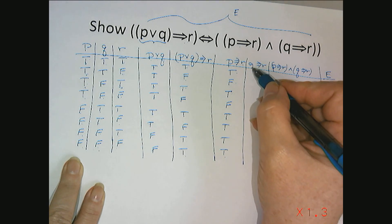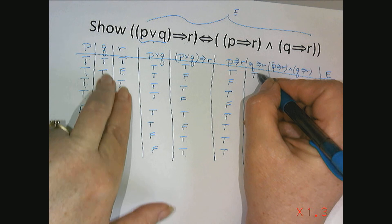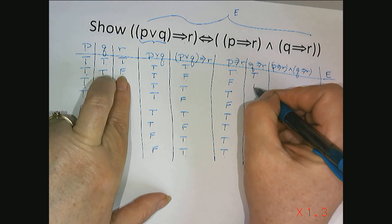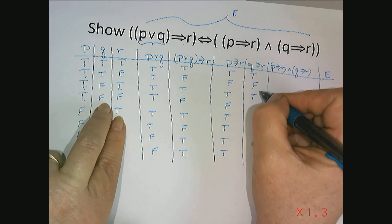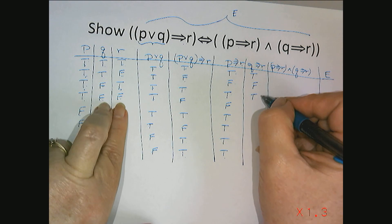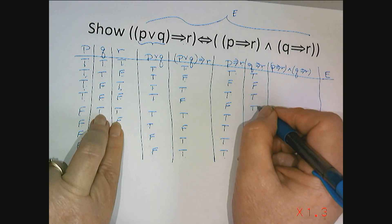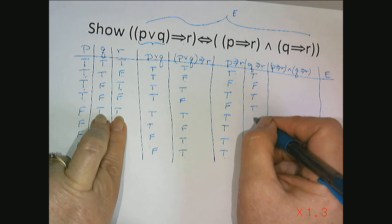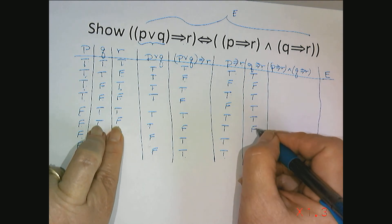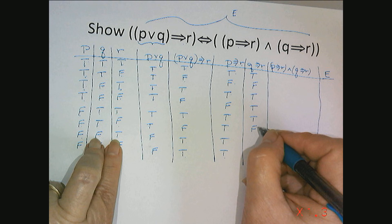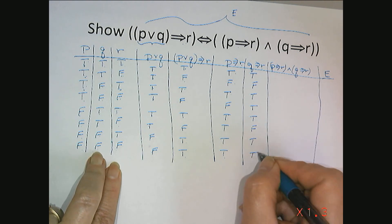Now we need to figure out q implies r: true implying true is true; true implying false is false; false implying false is true; false implying false is true; true implying true is true; true implying false is false; false implying true is true; false implying false is true.